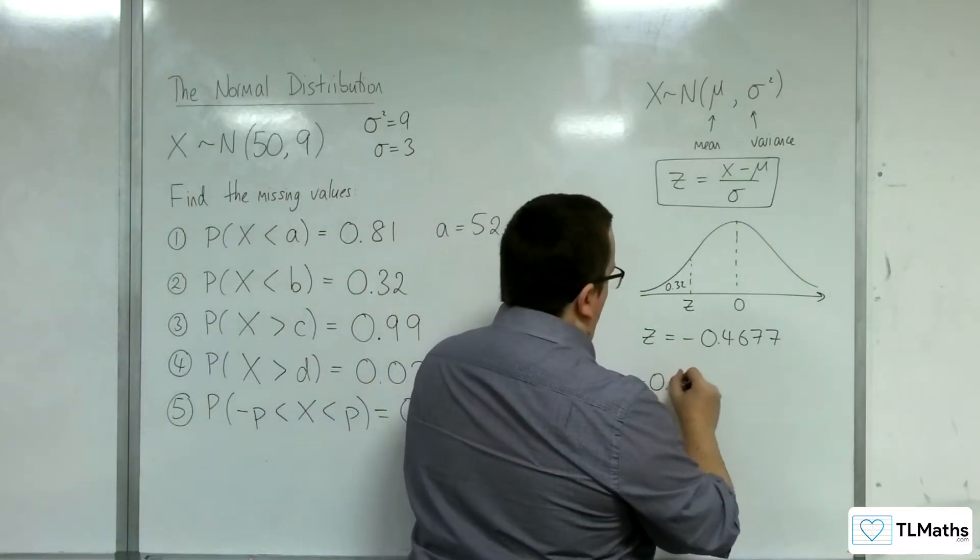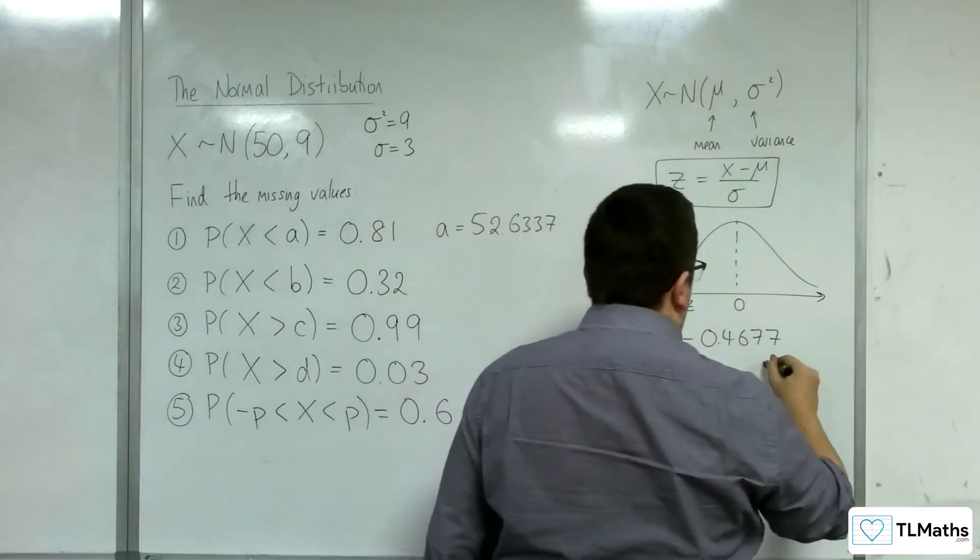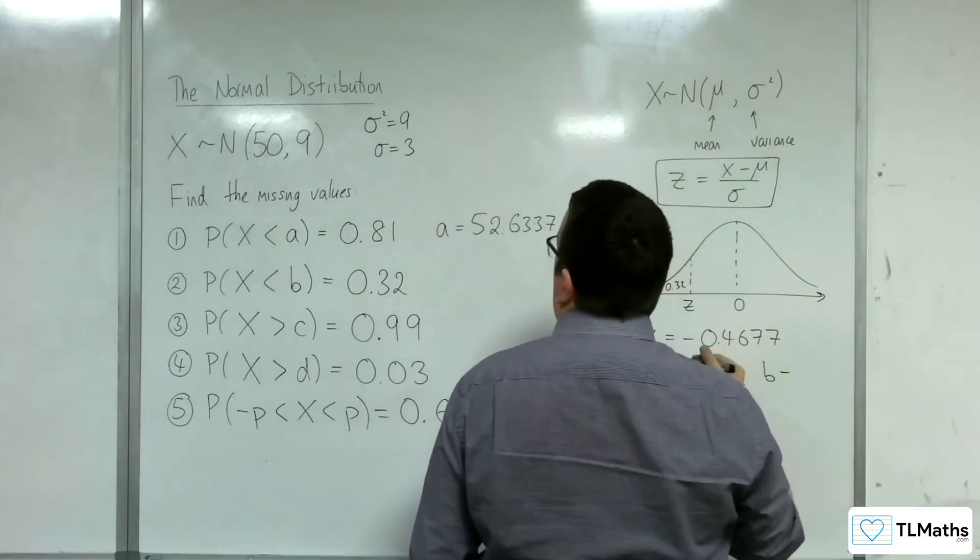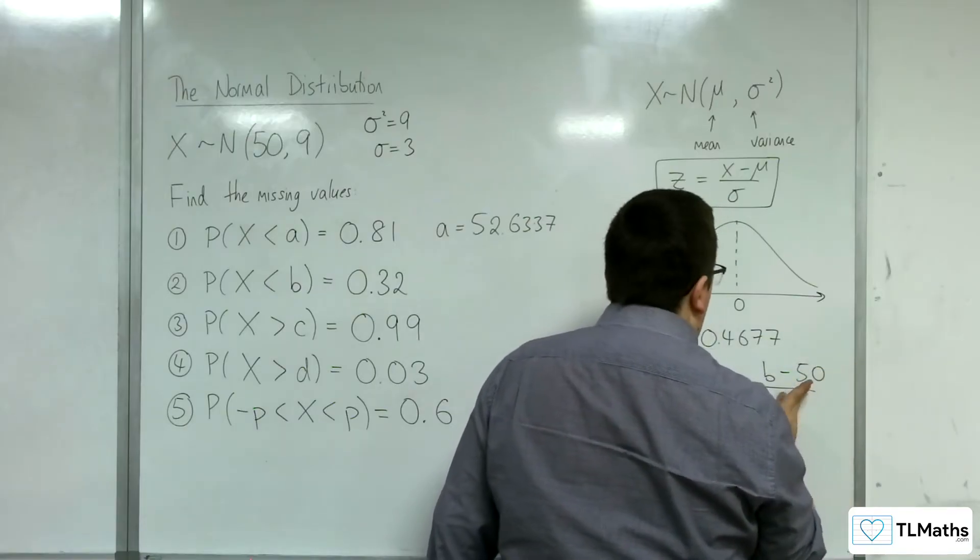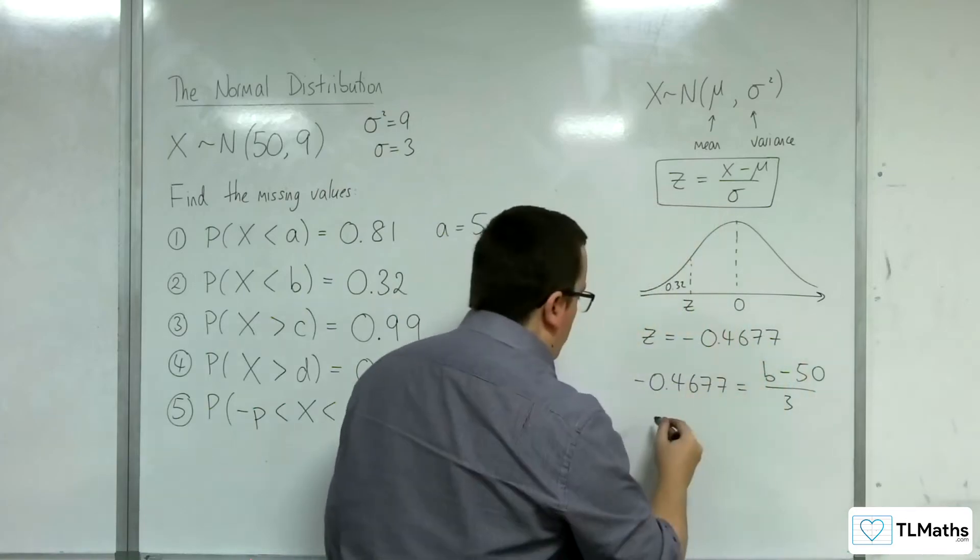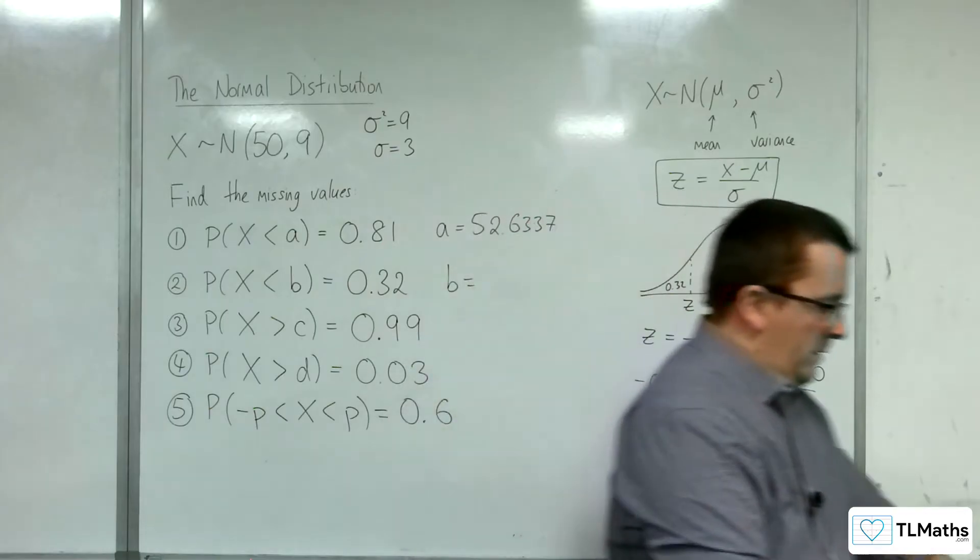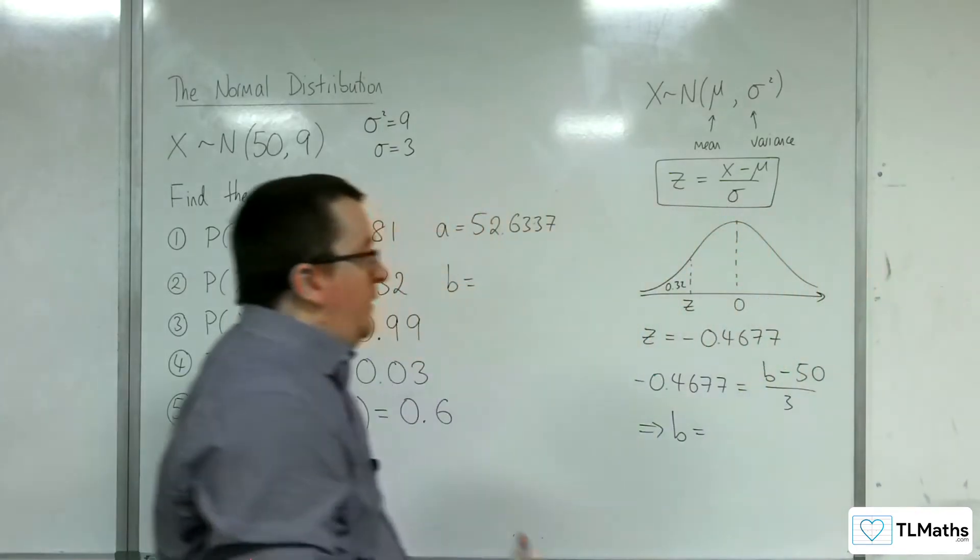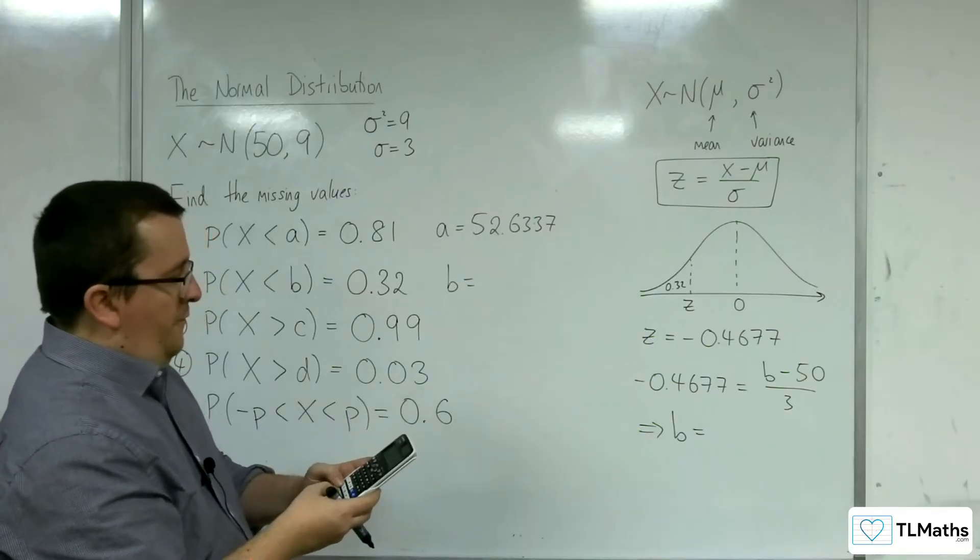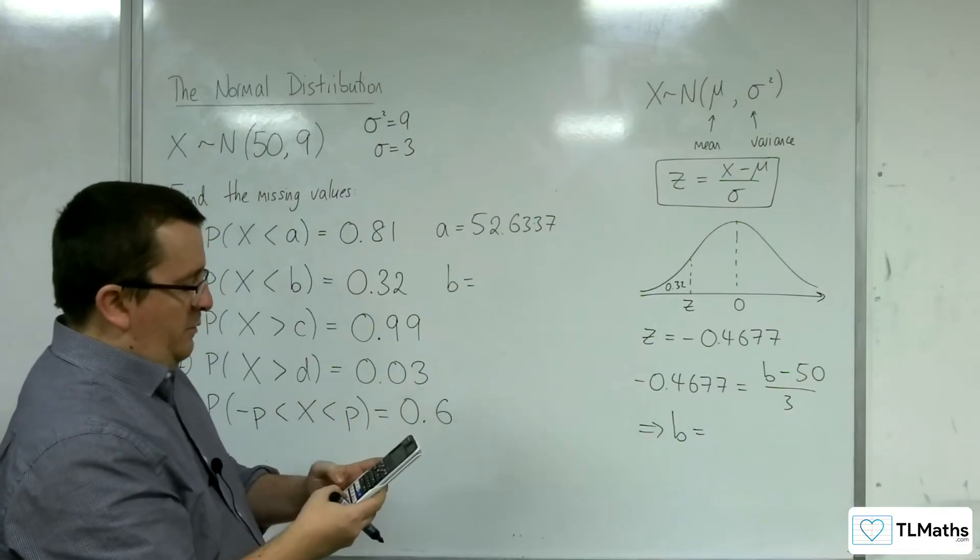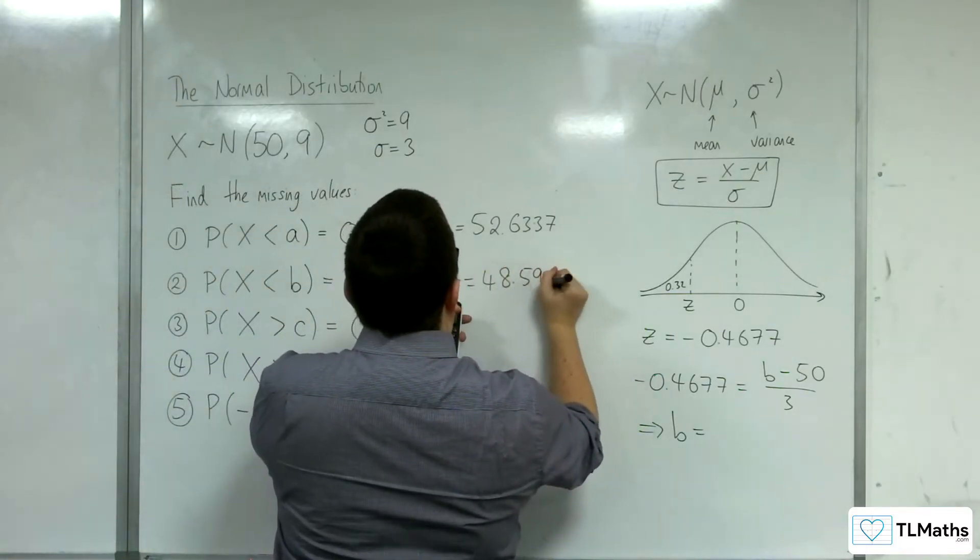So minus 0.4677 is equal to, the x value is B, take away the mean, so 50, over the standard deviation, not variance. So that gives me an equation to find B. So whatever this value is, it should be less than 50. So minus 0.4677 times by 3, add on 50, and we get 48.5969.